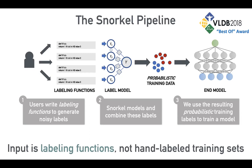Finally, once we have our labels for our training data from steps one and two, we can go ahead and train a machine learning pipeline. This model can be anything — the latest BERT model, an LSTM, logistic regression. Any model you would train with normal training data, you can train with this probabilistic training data.